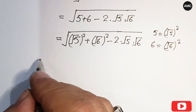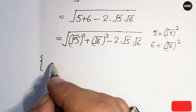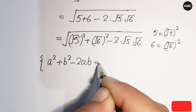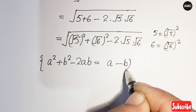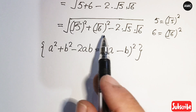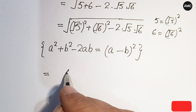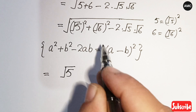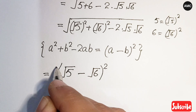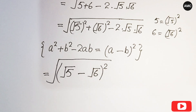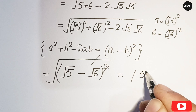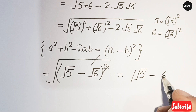We see that the algebraic formula a² plus b² minus 2ab equals (a minus b)². Applying this identity here, our a is √5 and our b is √6, giving us (√5 minus √6)² under the outer square root. Canceling the square with the square root introduces an absolute value, so we get the absolute value of (√5 minus √6).